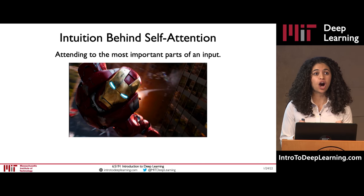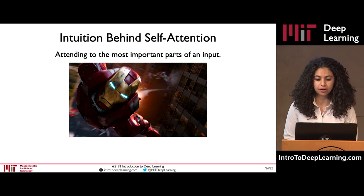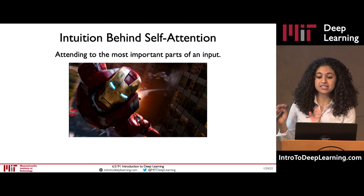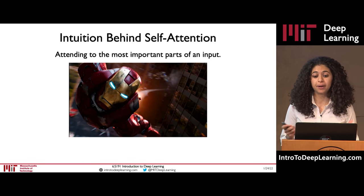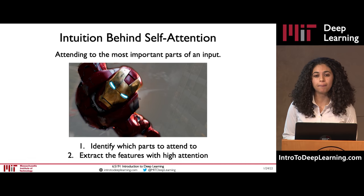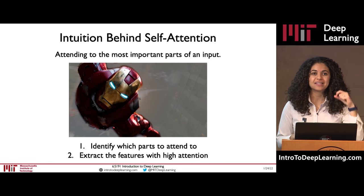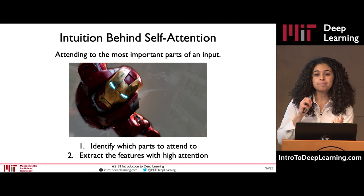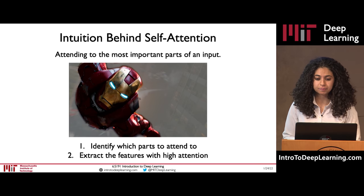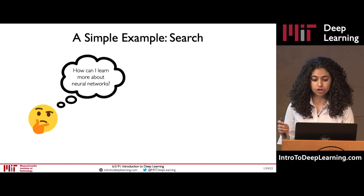Specifically, we're going to talk about this idea of self-attention: the ability to take an input and attend to the most important parts of that input. It's easiest to build up that intuition by considering an image — let's look at a picture of Iron Man. How do we figure out what's important? A naive way could be to scan across this image pixel by pixel. But as humans, our brains are able to immediately pick up what is important in this image just by looking at it — Iron Man coming at us. What this comes down to is the ability to identify the parts that are important to attend to, and extract features from those regions with high attention. This first part is very similar conceptually to search.